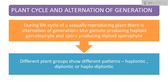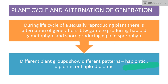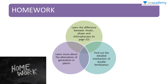Next is the plant life cycle and alternation of generation. During the life cycle of a sexually reproducing plant, there is alternation of generation between the gamete-producing haploid gametophyte and the spore-producing diploid sporophyte. Different plant groups show different patterns like haplontic, diplontic, or haplodiplontic.